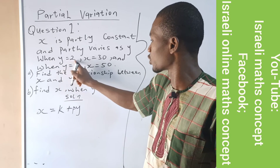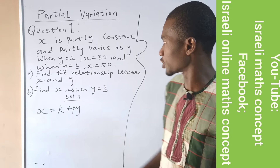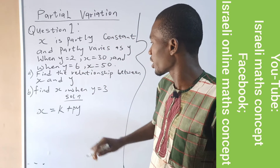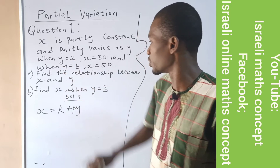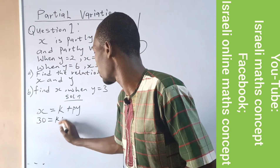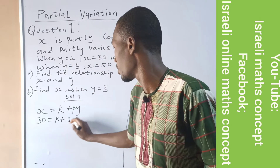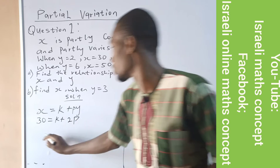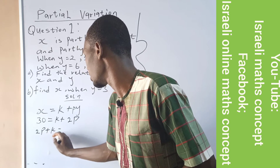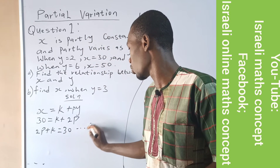The question says when y is equal to 2, x is equal to 30. According to this given equation, wherever I see x I replace it with 30, and wherever I see y I replace it with 2. So 30 is equal to k plus p times 2, which gives 2p. I rearrange to get 2p plus k equals 30. Let me call this equation 1.